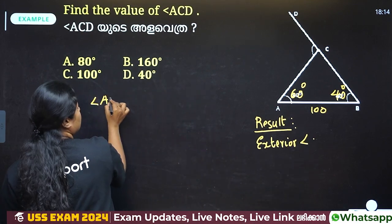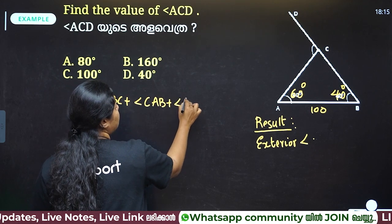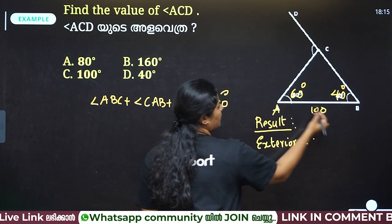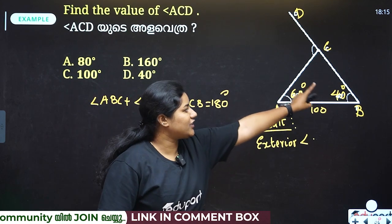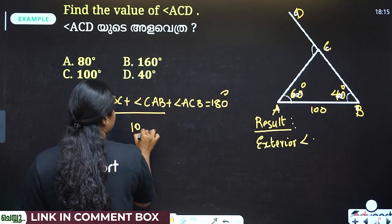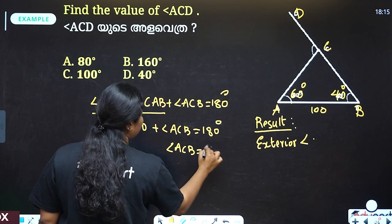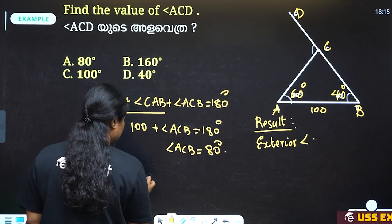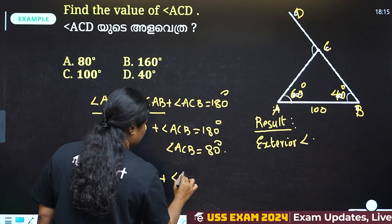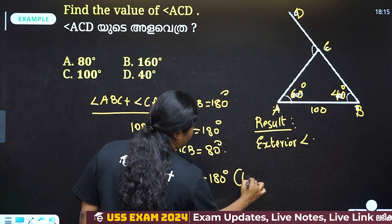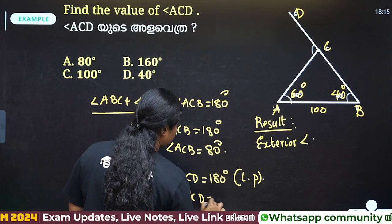Angle ABC plus angle CAB plus angle ACB equals 180 degrees. This is 60, this is 40. If we add them it is 100. 100 plus angle ACB equals 180. So ACB equals 80 degrees. And the angle ACD, which is the exterior angle, is also 80 plus 20 — wait, it is 100 degrees.